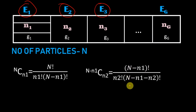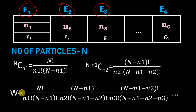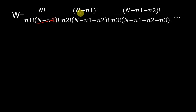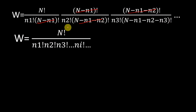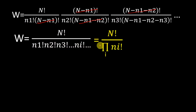Let us call this W. W equals the product of the combinations for e1, e2, e3, and so on. You can see that in the product the factorials cancel — this cancels this one, this one cancels this one, and so on. What we are left with is n factorial divided by n1 factorial times n2 factorial times n3 factorial and so on to ni factorial — which we can write as n factorial divided by the product over i of ni factorial. This is one important part of the answer.